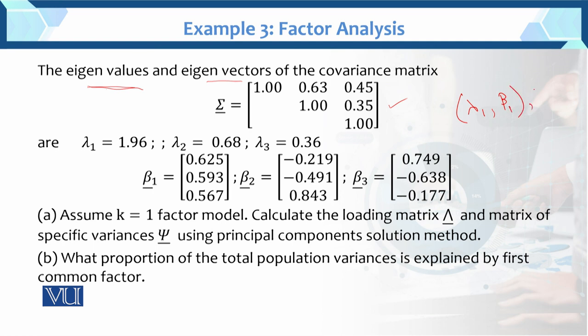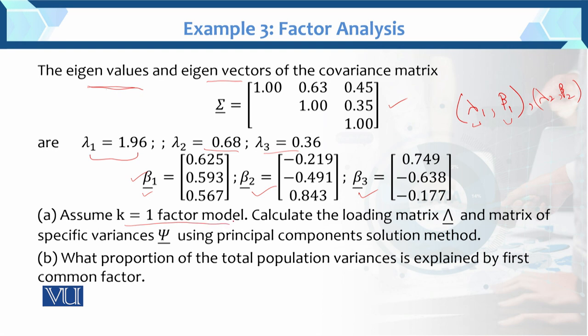We have pairs: lambda 1, beta 1 and lambda 2, beta 2. This is the pair of eigenvalue and eigenvector. Lambda 1 is the largest eigenvalue, lambda 2 is the second largest, and lambda 3 is the third. Beta 1, beta 2, beta 3 are the corresponding eigenvectors. Now, the first part: assume k equals 1, a one-factor model. We need to find the one-factor solution. Mathematically, we have seen the one-factor solution; more than one factor will be solved using software.